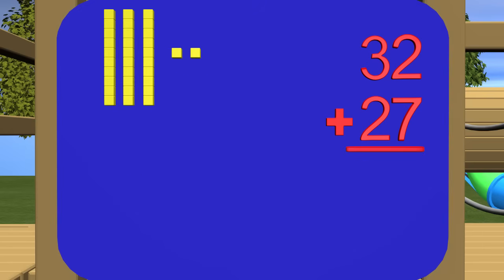Now onto the 27. We need to get 27 blocks and we need to start in the tens place. So here is 10, 20. Now in the ones place, I need 7 of the ones blocks. So I get 1, 2, 3, 4, 5, 6, 7.